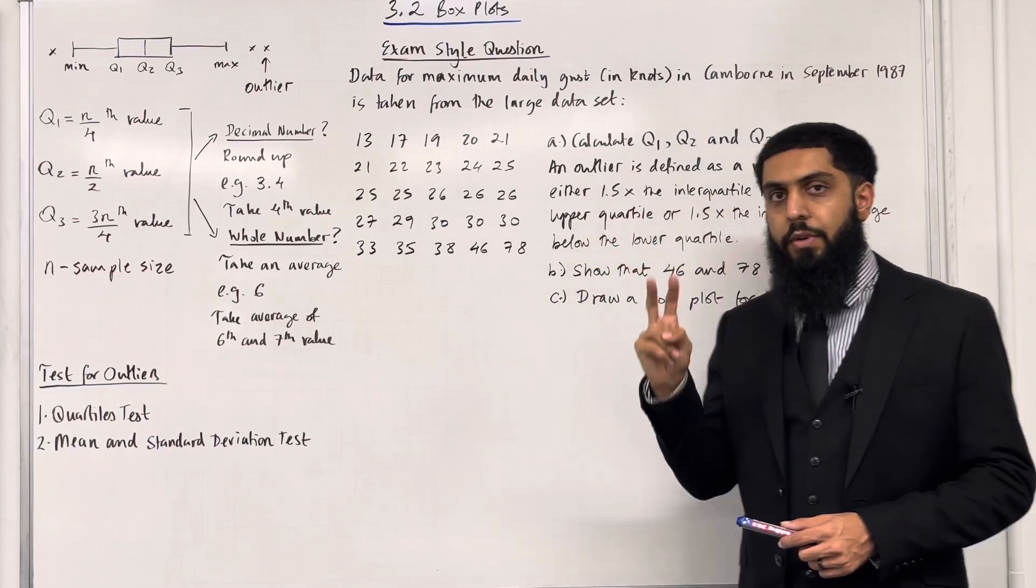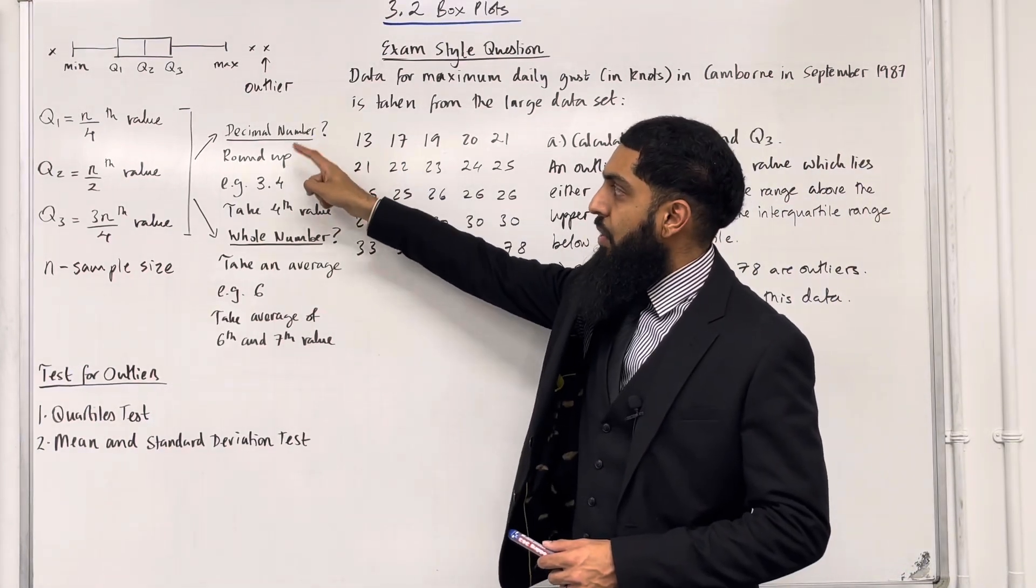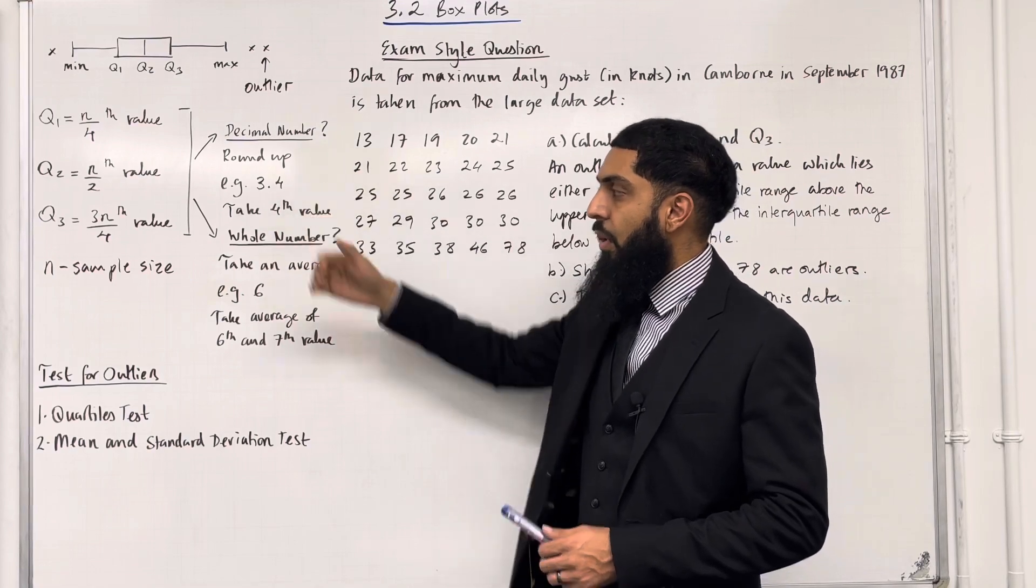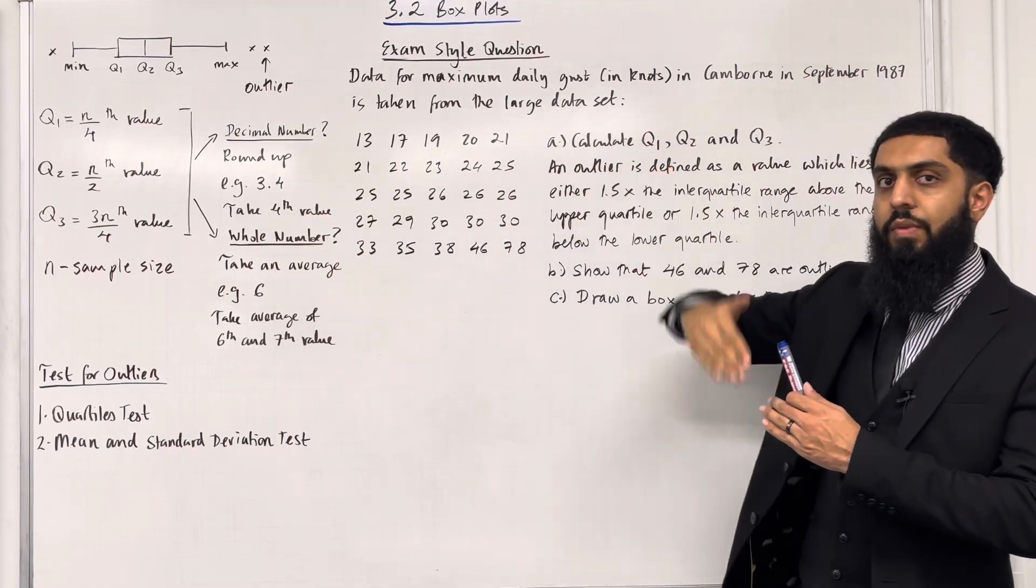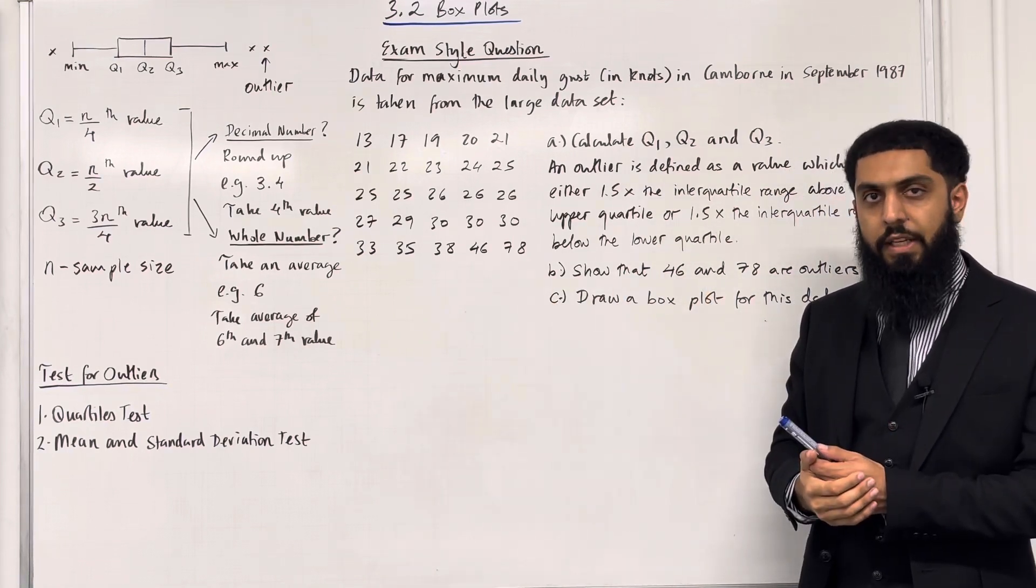There are two different scenarios. Scenario one: if your answer is a decimal number, you round up. For example, if your answer is 3.4, you take the fourth value. So you put your data set in ascending order and take out the fourth value.